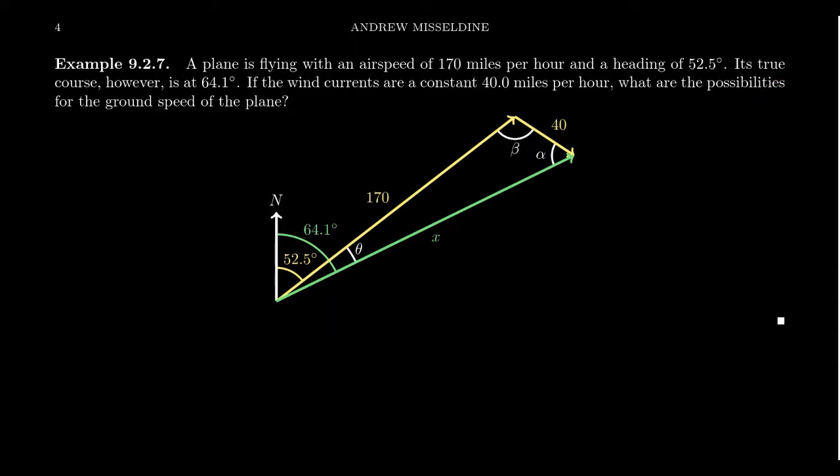Because we know the heading and the true course, these directions, we can calculate the difference between those. 64.1 minus 52.5 degrees, that is equal to 11.6 degrees. Let's call that angle theta, which would be represented here on the diagram. We have that right there. Notice we have a side, we have a side and we have an angle.